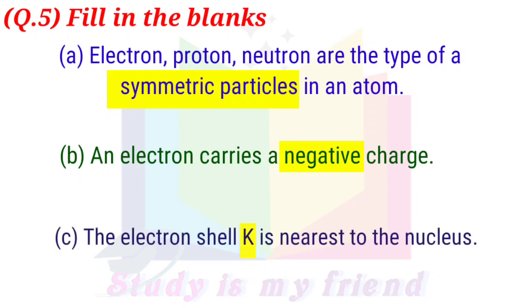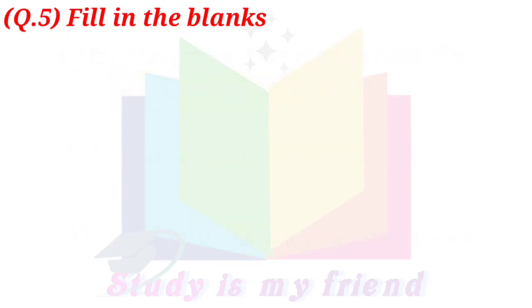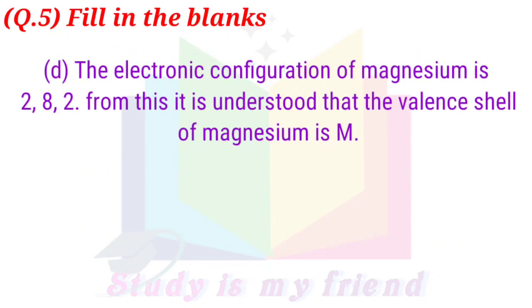K shell is nearest to the nucleus. Part D: The electronic configuration of magnesium is 2, 8, 2. From this it is understood that the valence shell of magnesium is M.